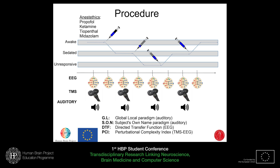Our procedure is that we're going to give four different anesthetics and send people into a sedated state and an unresponsive state. We're going to measure EEG throughout the whole experiment, and at each stable state — the awake state, the sedated state, and the unresponsive state — we're going to stimulate with magnetic stimulation and perform two auditory paradigms, which I'll go through now.